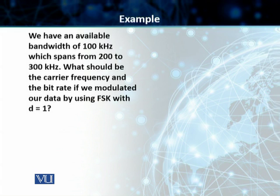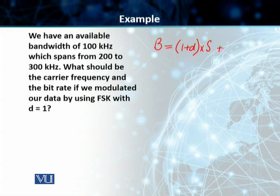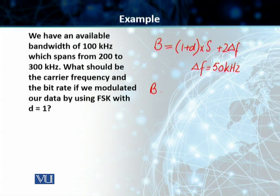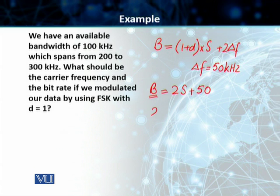This is the same example that we did in the case of ASK, but in this case we are using FSK and not ASK. We know that the bandwidth in the case of FSK is equal to (1 + D) times S plus 2 times delta F. In this case, we will choose our delta F to be 50 kHz. So the bandwidth, which is equal to 100, is equal to 2S plus 50, since D equals 1. The bandwidth is 100, so 2S plus 50 equals 100, and 2S equals 50 kHz.